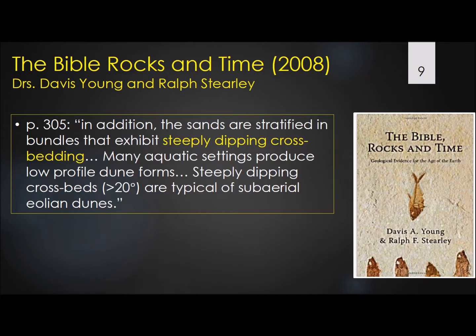And again on page 305, they say in addition the sands are stratified in bundles that exhibit steeply dipping crossbedding — those are those steep angles I was talking about. Many aquatic settings produce low profile dune forms. Steeply dipping crossbeds of greater than 20 degrees are typical of sub-aerial Aeolian dunes.